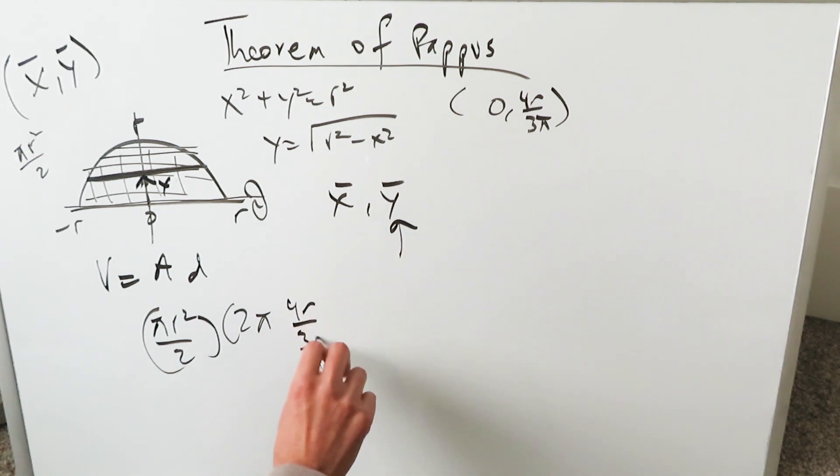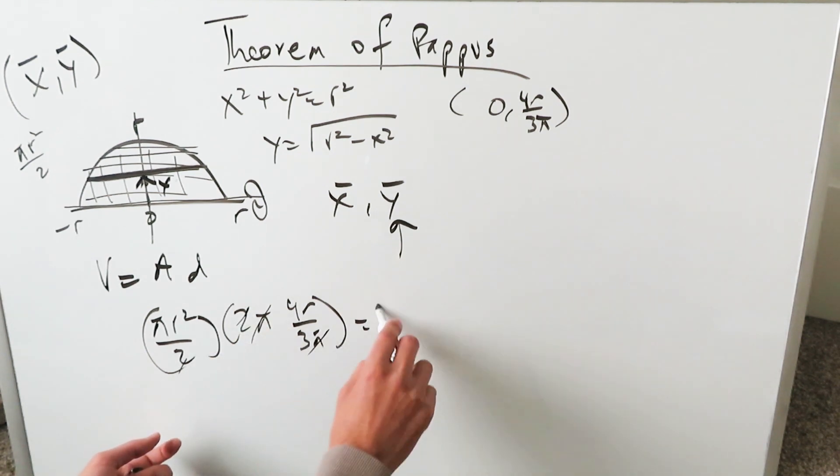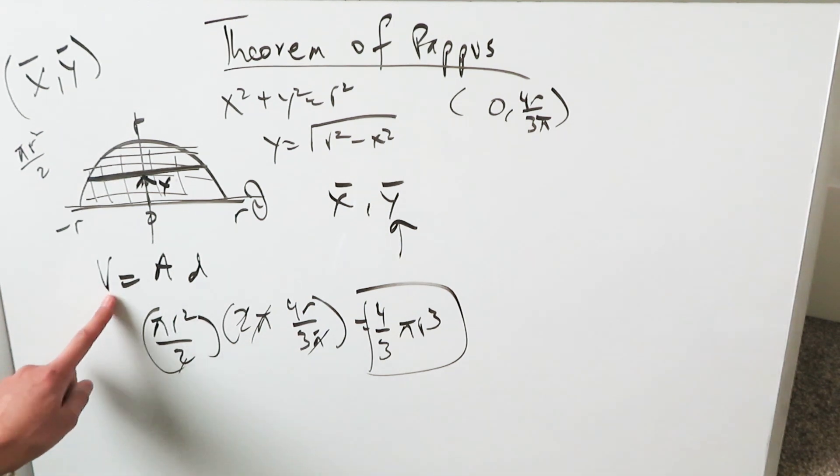My area of this representation is πr²/2. The y value, 2π, and then the ȳ value will be this, 4r/(3π). When you consolidate all of this, this π, this π, that 2, cancel out, you'll have 4/3 πr³, and your volume has been determined from this formula.